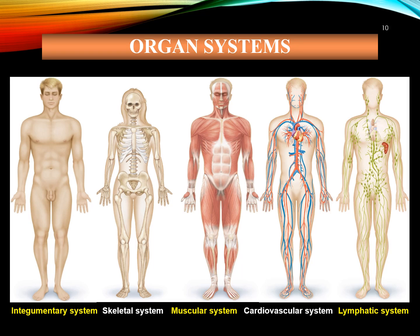The lymphatic system, or lymphoid system, is an organ system in vertebrates that is part of the circulatory system and the immune system. It is made up of a large network of lymphatic vessels, lymphatic or lymphoid organs, and lymphoid tissues. The vessels carry a clear fluid called lymph. The human circulatory system processes an average of 20 liters of blood per day through capillary filtration. Roughly 17 liters of filtered plasma is reabsorbed directly into blood vessels, while the remaining 3 liters remain in the interstitial fluid. One of the main functions of the lymphatic system is to provide an accessory return route for this surplus 3 liters.